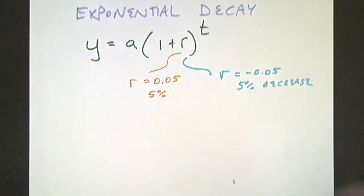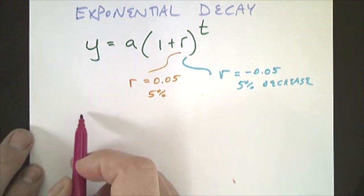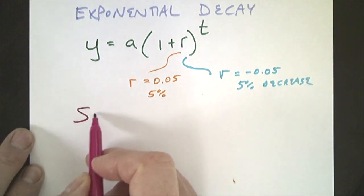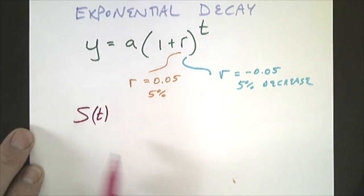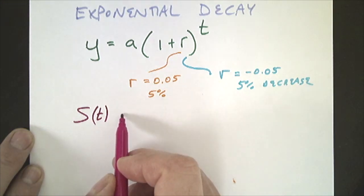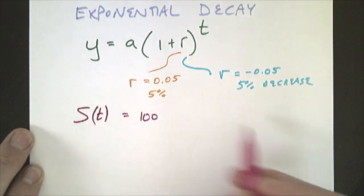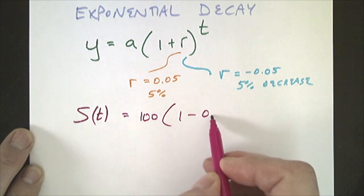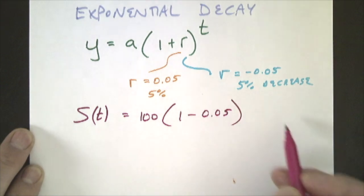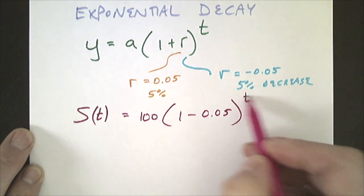So our example for decay has to do with your satisfaction. Your satisfaction over number of months, so T is in months, and we're going to say it's 100%, and decreases by 5%, 0.05, over a number of months.